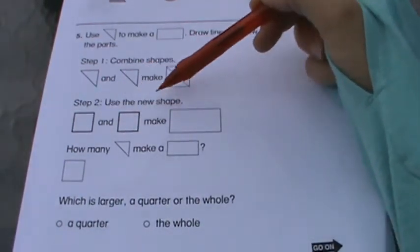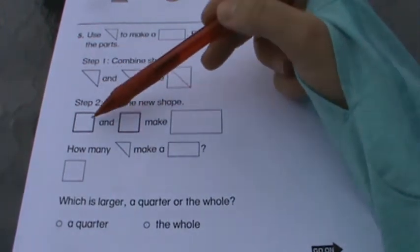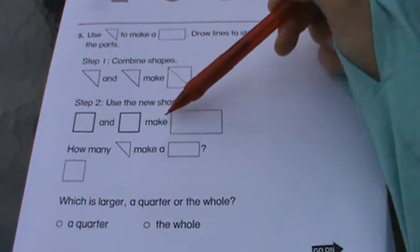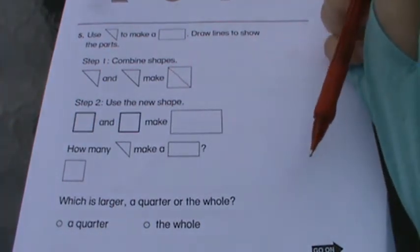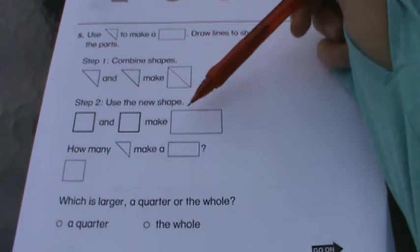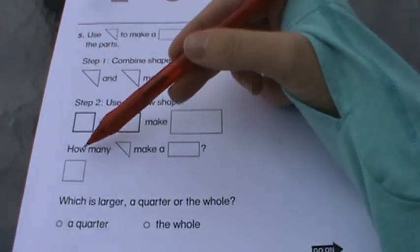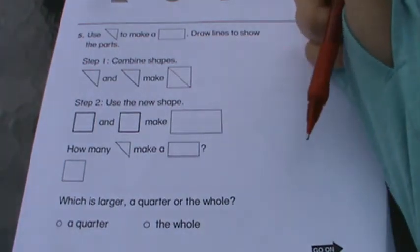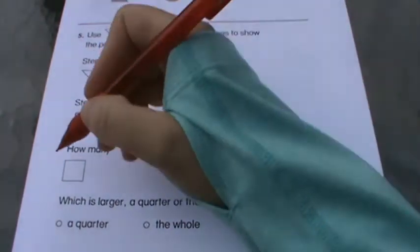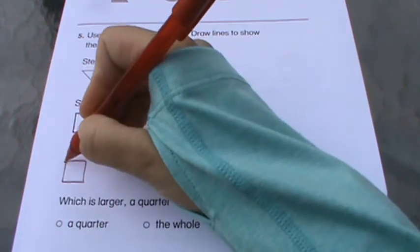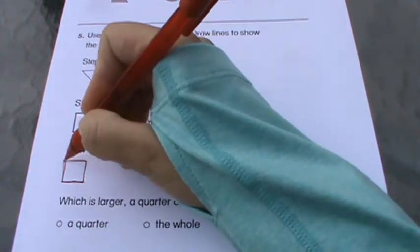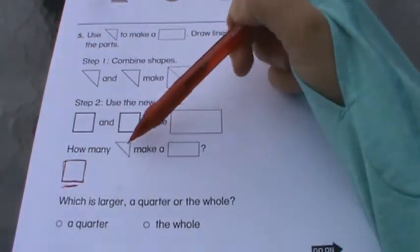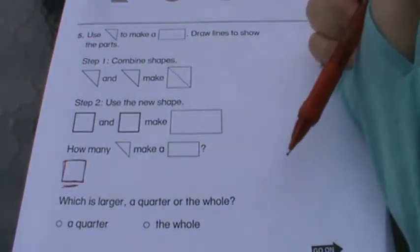Step two: use that new shape, that square. And you're going to put a square and a square together to make this rectangle. Thinking back to those triangles, how many triangles did it take to make that rectangle? This is where you put your answer inside of here. Put your number answer of how many triangles it took to make that rectangle.